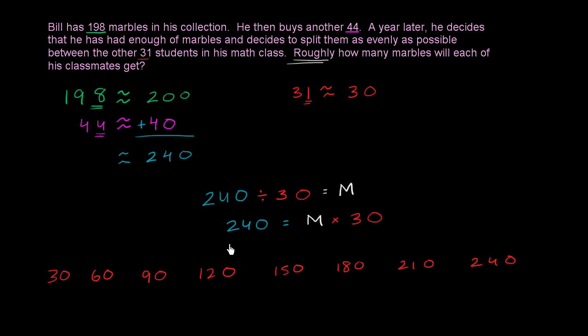So we could write 240 is equal to 30 times 8, which is the same thing as 8 times 30. Or another way we could say is the number of marbles each of his friends is going to get is roughly 8. So each of his classmates is going to get roughly 8 marbles.